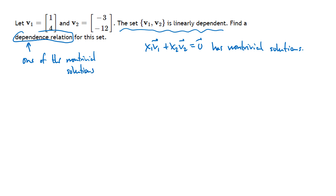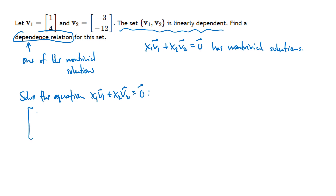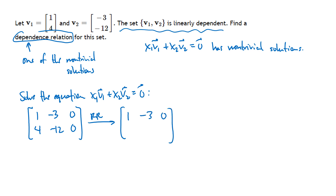What we need to do is solve the equation x1·v1 + x2·v2 = 0. The augmented matrix has those two given vectors as columns, with the augmented zeros column appended. After row reducing, we get 1, -3, 0 in the first row and all zeros in the second row. Writing out the solution: x1 = 3x2, and x2 is free. The all-zero second row tells us nothing; the lack of a pivot in the second column is what tells us x2 is free.